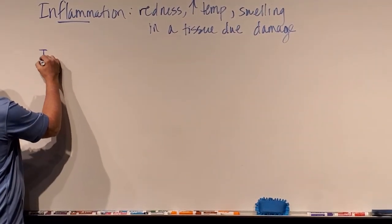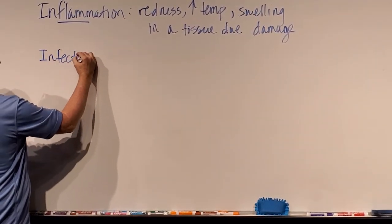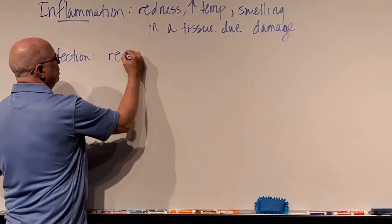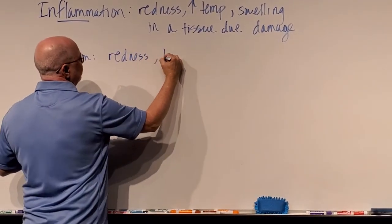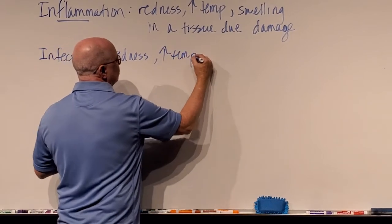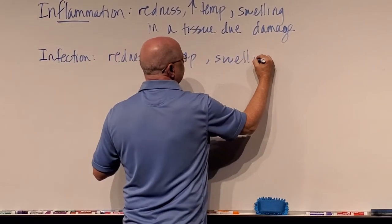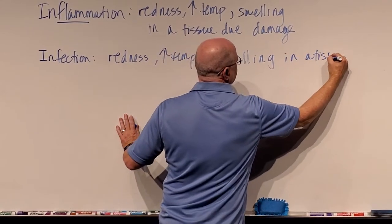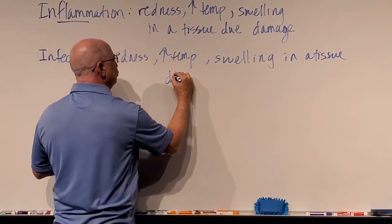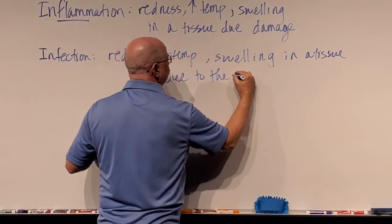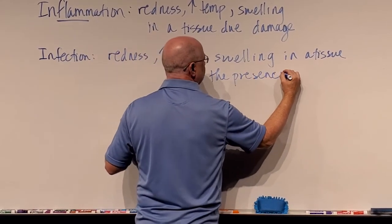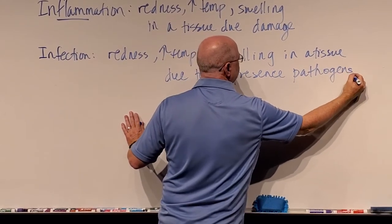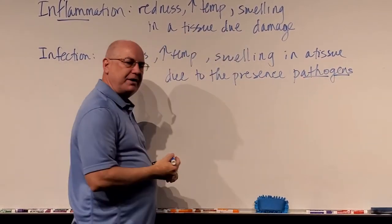Now the next term is infection. Infection is inflammation, but for a different reason. So we can say that it's redness, increased temperature, and swelling in a tissue. But this is due to the presence of what we call pathogens — the generators of pathology.